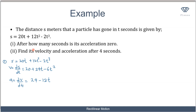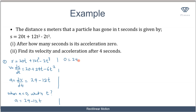Now we found the acceleration function a = 24 - 12t. To find when acceleration is zero, we set a = 0: 0 = 24 - 12t, so 12t = 24, and dividing both sides by 12 gives t = 2 seconds. So after 2 seconds, the acceleration of the body is zero.